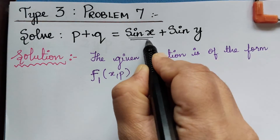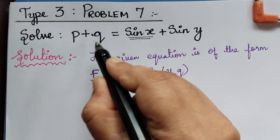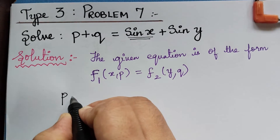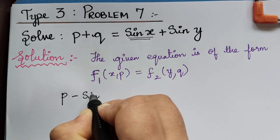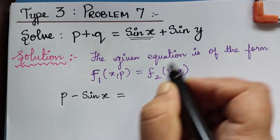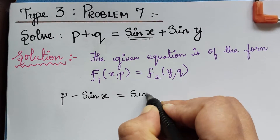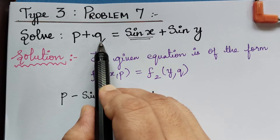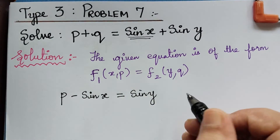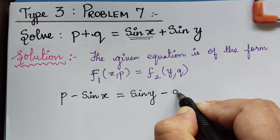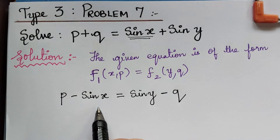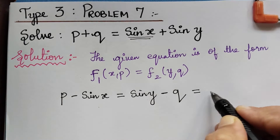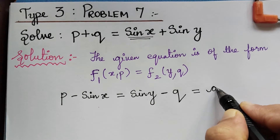We have sin x on the left, so we take it to the left of the equation and it becomes p minus sin x is equal to sin y, and q on the left we take to the right, so it becomes minus q. Therefore p minus sin x is equal to sin y minus q, and this will be equal to a general constant a.